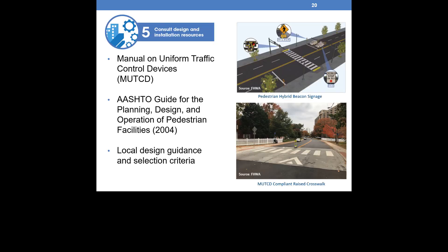Once countermeasures have been selected, you can move to Step 5, consult local and national design and installation resources. The Manual on Uniform Traffic Control Devices Chapter 4 provides detailed guidance on pedestrian control features and pedestrian hybrid beacons. You can also consult the MUTCD on signage and roadway markings for all countermeasures. The AASHTO Guide for the Planning, Design, and Operation of Pedestrian Facilities is another resource that describes the preferred design of pedestrian countermeasures. You can also review local policies and guidance for design and countermeasure installation, which may highlight opportunities to improve local guidelines.